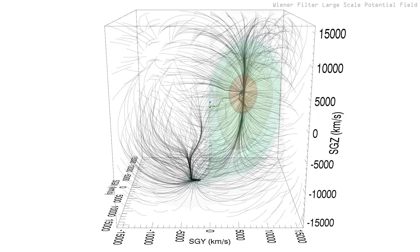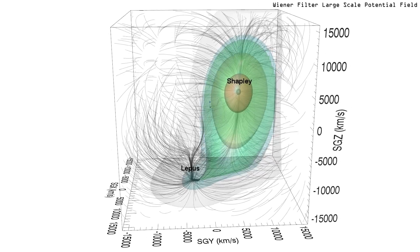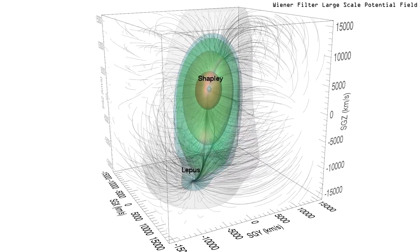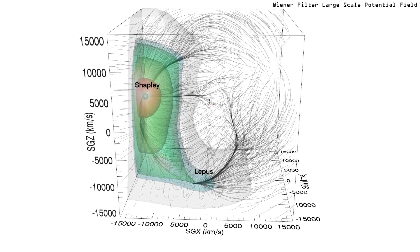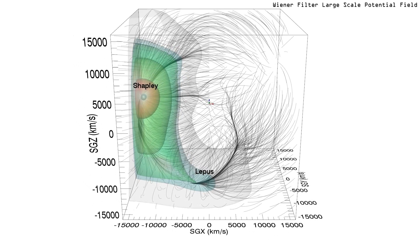Here we superimpose the potential field responsible for the peculiar velocity flow. The Shapley galaxy concentration is the dominant local feature. The secondary feature in the direction of Lepus appears to be connected.